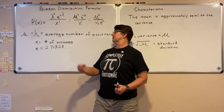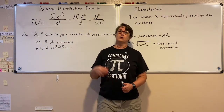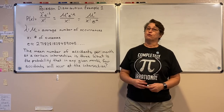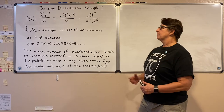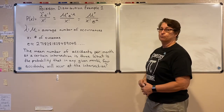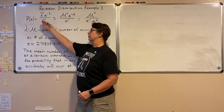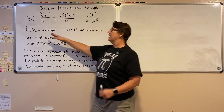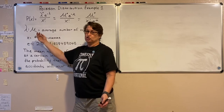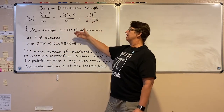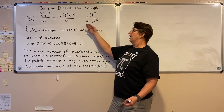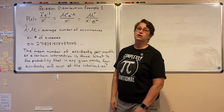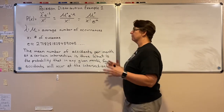Let's look at some examples where we actually use the formula. Remember the Poisson formula: we saw that if we look on the Internet or in books, we'll probably see it with lambda, but we use mu for that lambda. X is the number of successes, and e is Euler's number, approximately 2.718281828459045 — it just goes on and on.